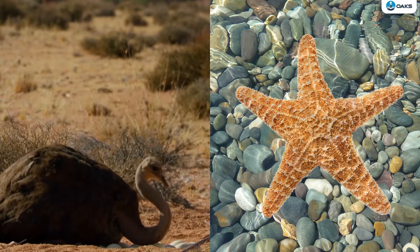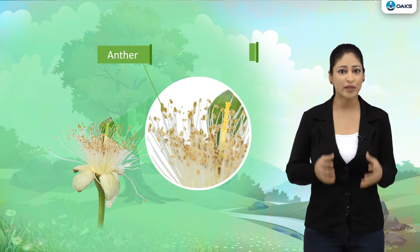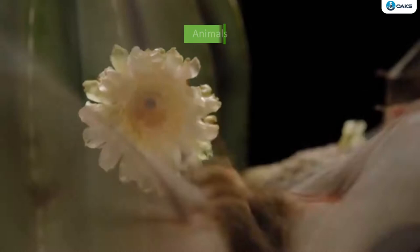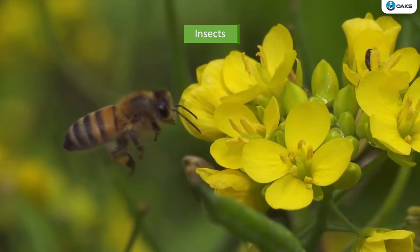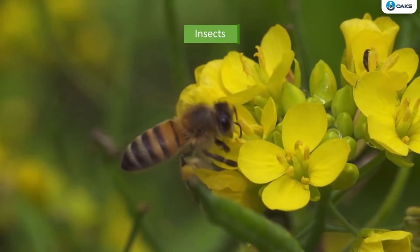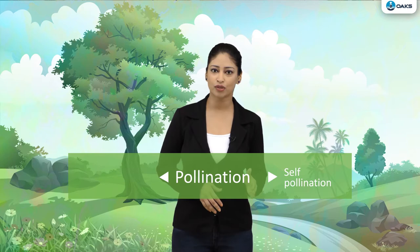It happens when a pollen grain from the anther reaches the stigma of a flower. Agents such as wind, animals, and insects disperse pollen on the stigma, and this process is called pollination. Based on mode and agents, pollination has been classified into self-pollination and cross-pollination.